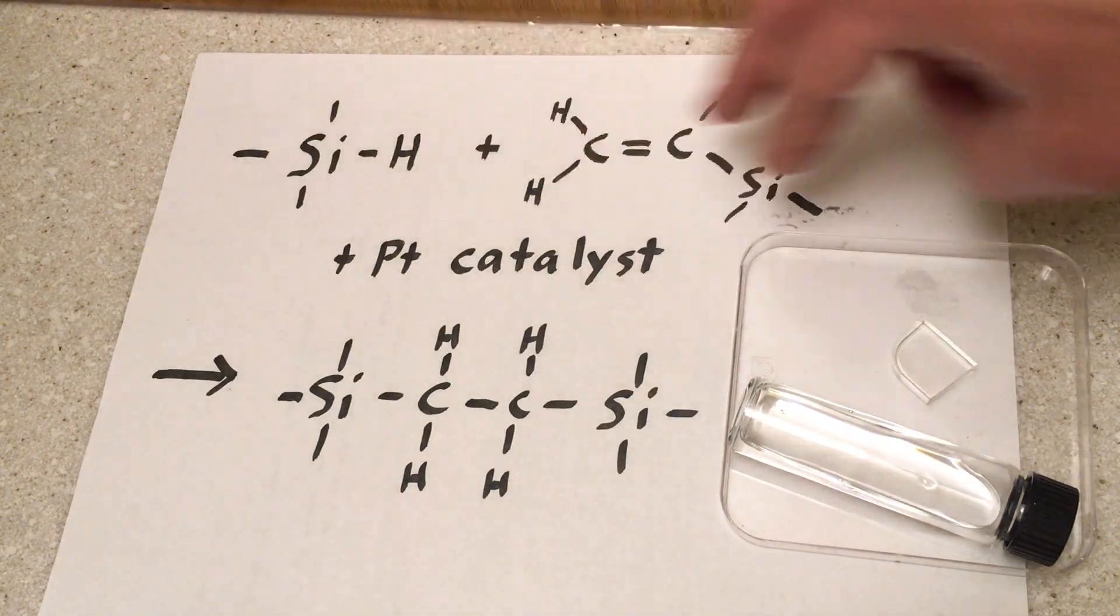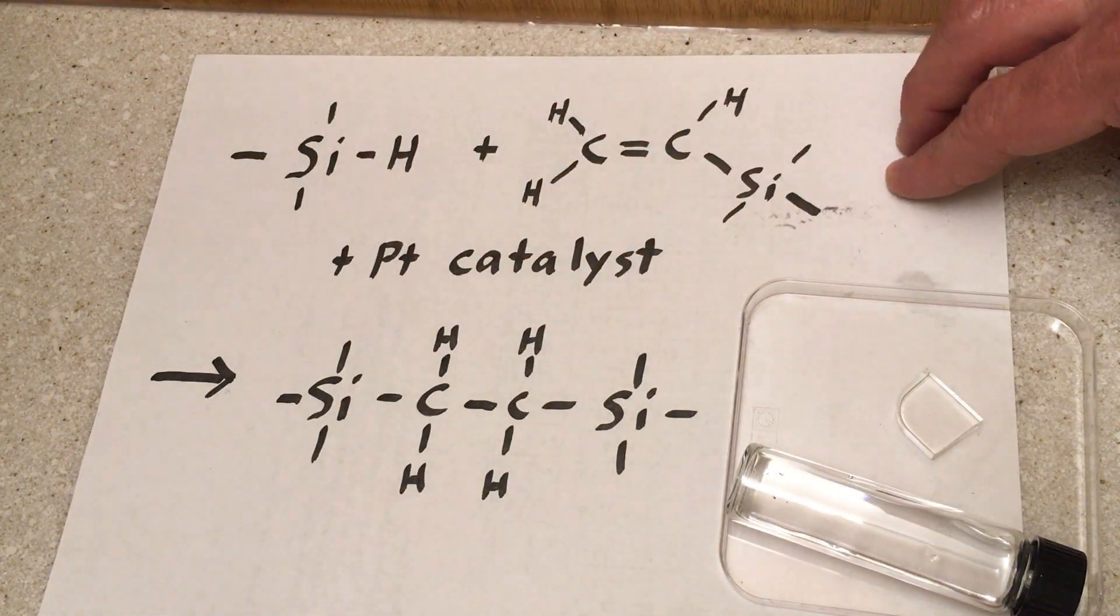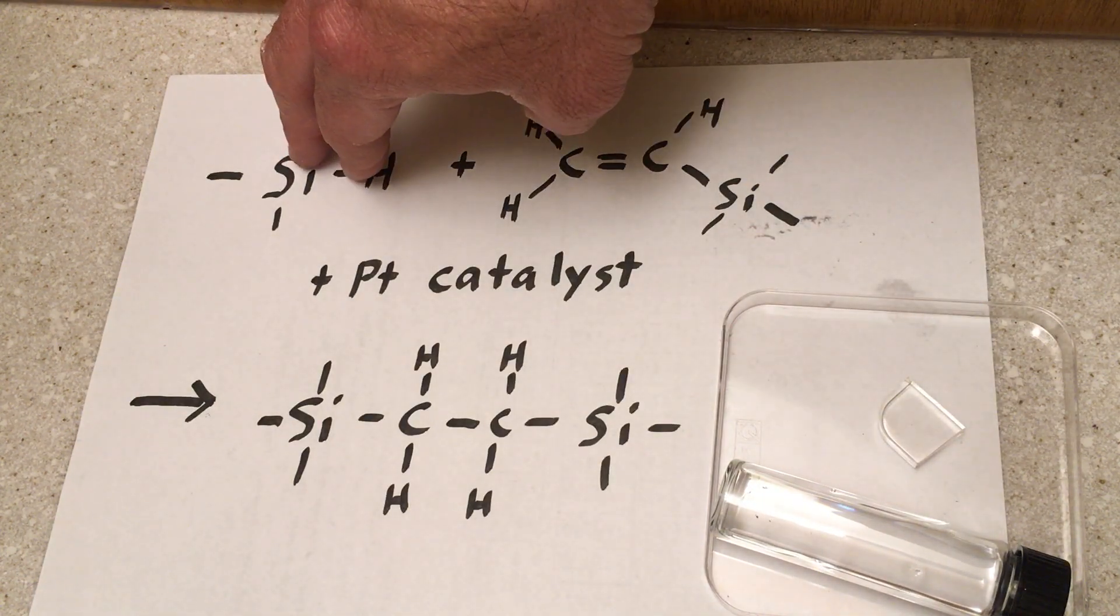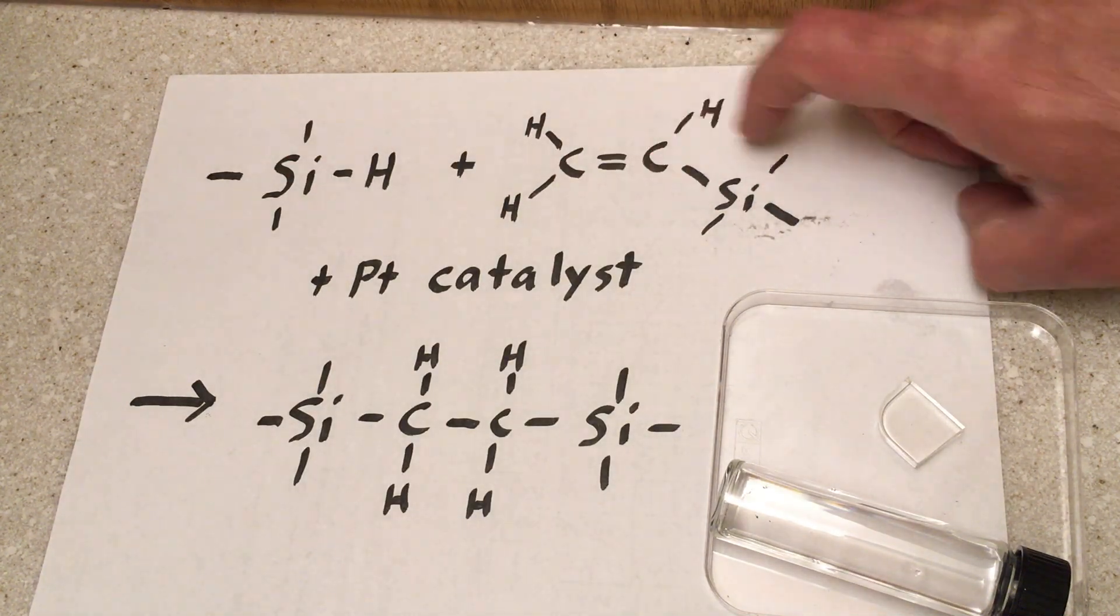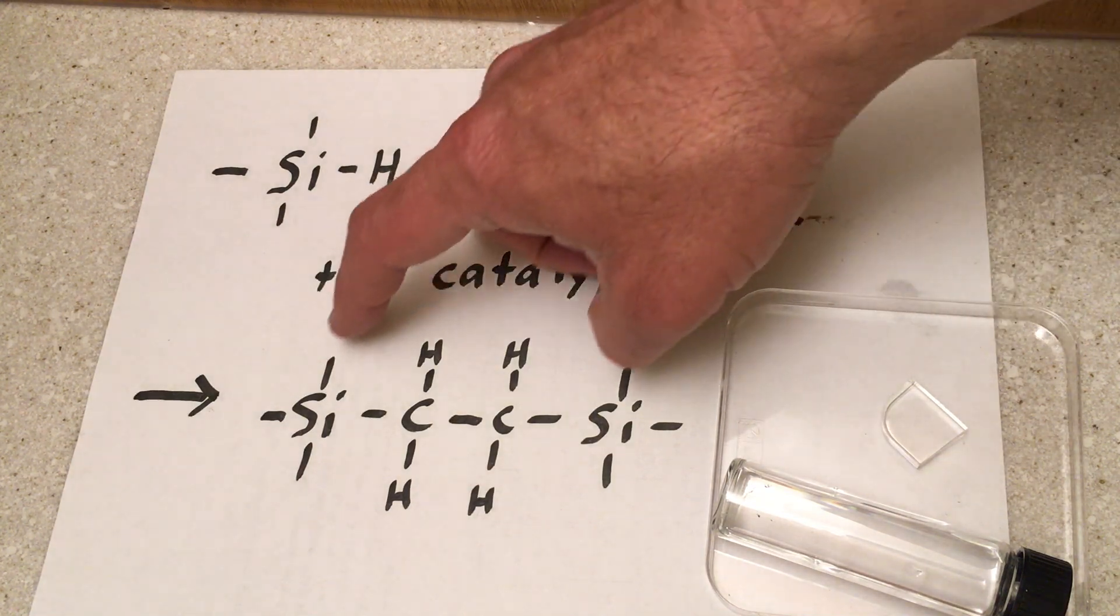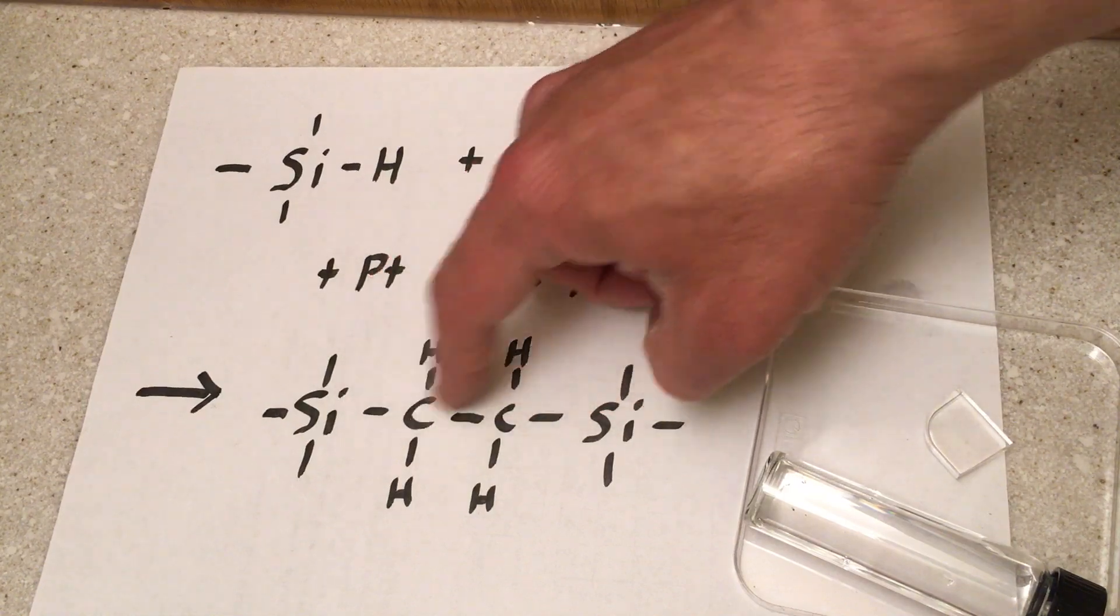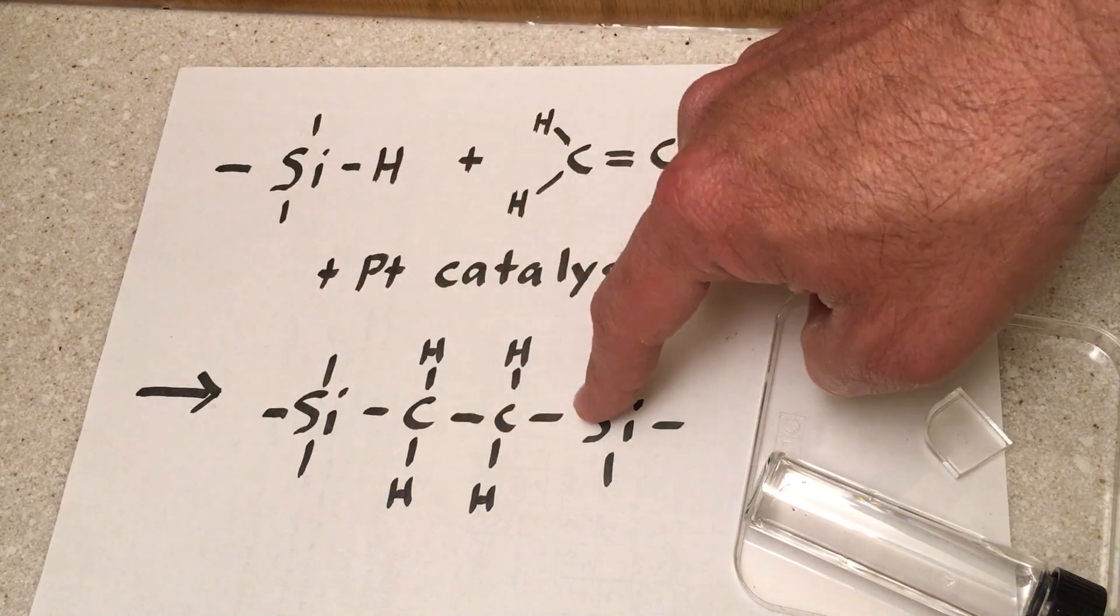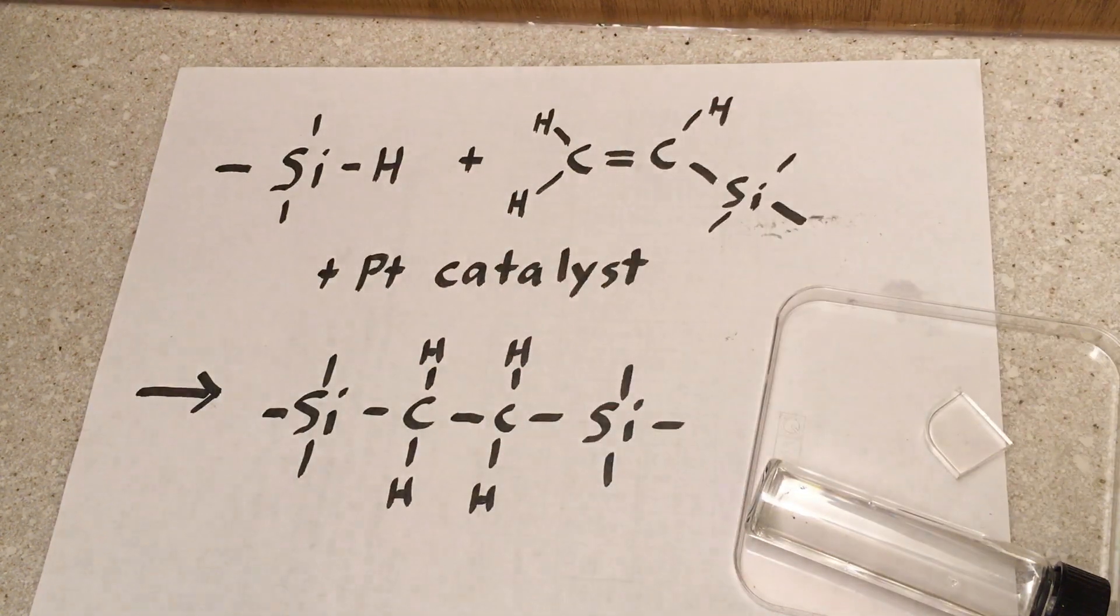Now, when these two are put together in the presence of a platinum catalyst, what happens is this silicon-hydrogen bond breaks. And the silicon attaches to one of the carbons and the hydrogen attaches to the other carbon. And one of these carbon-carbon bonds breaks. And so, in the end, we have a silicon with a carbon-carbon, all singly bonded to another silicon. And so, this is another type of cross-link. And the hydrogens move into position like that. So again, something like this goes to something like this.